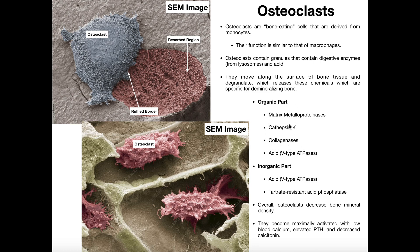These substances are secreted from the ruffled border region. To degrade the inorganic part, the acid released by V-type ATPases causes the metal ions to dissociate, making calcium easier to release from the bone. Osteoclasts also contain an enzyme called tartrate-resistant acid phosphatase, which works with the acid to remove calcium from the matrix. When calcium is released from the resorbed area, it enters the blood — which has important implications. Overall, the osteoclast degrades both the organic and inorganic components of bone, as both must be removed together.